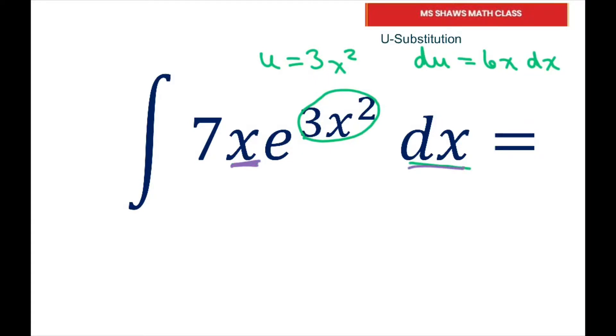Let me do this in purple. x dx. I'm just going to multiply both sides through by one-sixth. So I know that x dx is going to be one-sixth du.